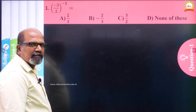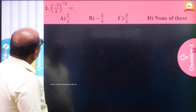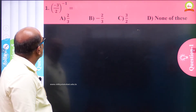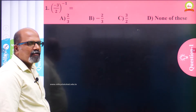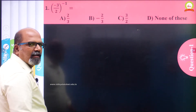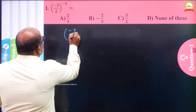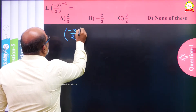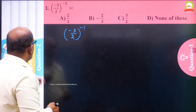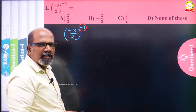We are seeing the first question on the screen, which shows minus 3 by 2, the whole power minus 1. We have to find the value of (-3/2)^(-1). I can see that we are having an exponent which is negative — a negative exponent.